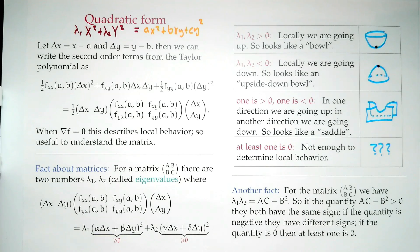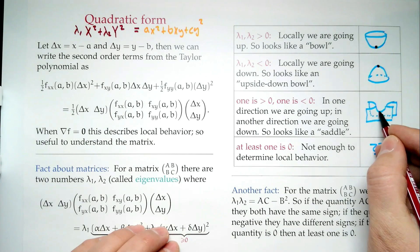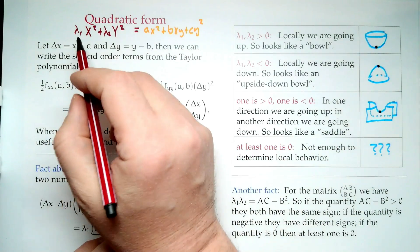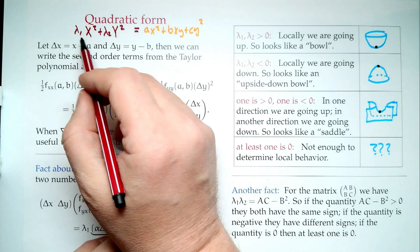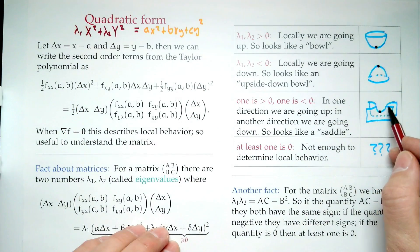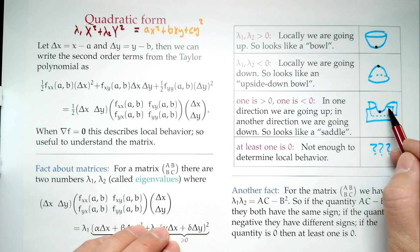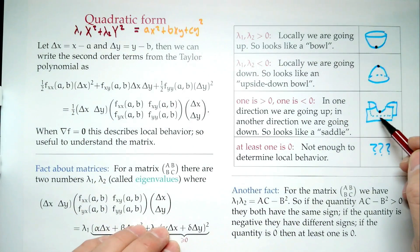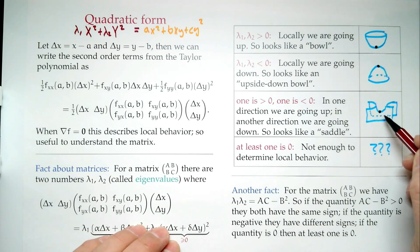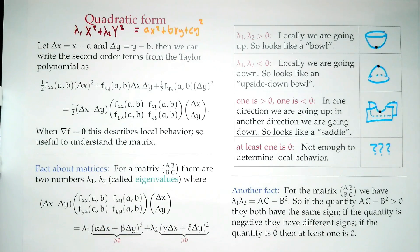Now if one of them is positive and one is negative — suppose λ₁ is positive — then in some direction you're going up, so it looks like a minimum. But if λ₂ is negative, in some other direction you're going down, so it looks like a maximum. This shape we call a saddle because it resembles a saddle.